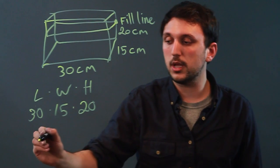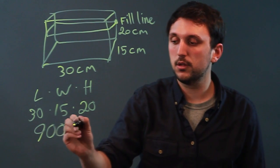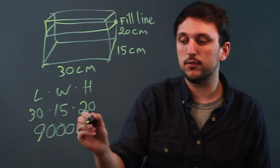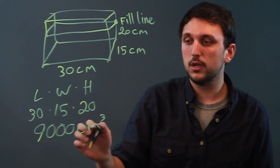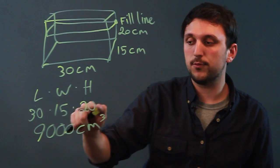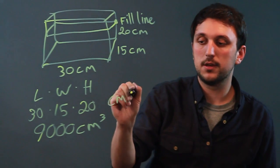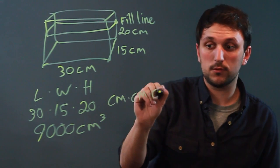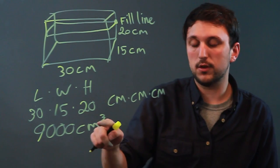So 30 times 15 times 20 is going to be 9,000. 9,000 what? 9,000 centimeters cubed. Because here you're going 30 times 15 times 20, but you're also saying centimeters times centimeters times centimeters. So that gives you centimeters cubed.